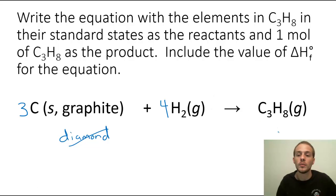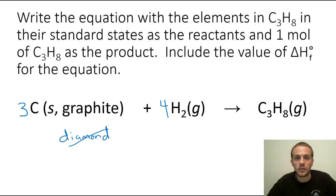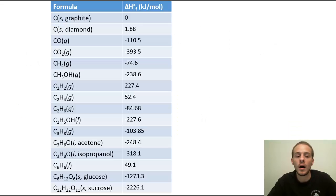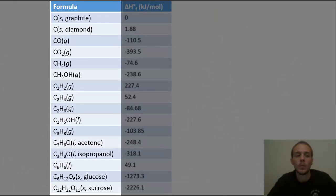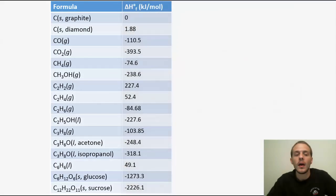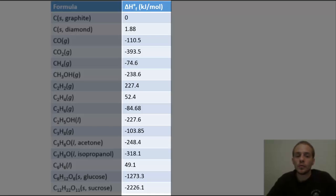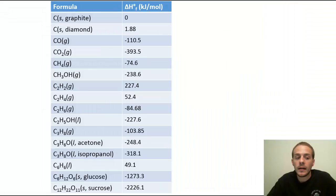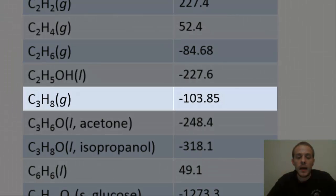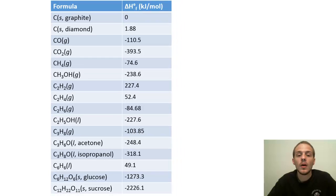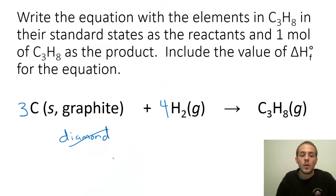The last thing we need to do is include the value of the standard enthalpy of formation for propane, which we find by referring to a table. There are tables online and in the back of your chemistry textbook. In this table, the left column shows chemical formulas for various carbon-containing compounds, and the right column shows the standard enthalpy of formation in kilojoules per mole. Finding propane, C3H8, we see its standard enthalpy of formation is negative 103.85 kilojoules per mole. We include that value to complete the equation.